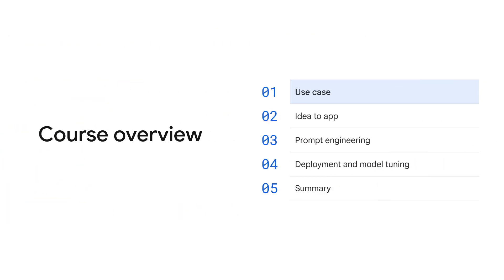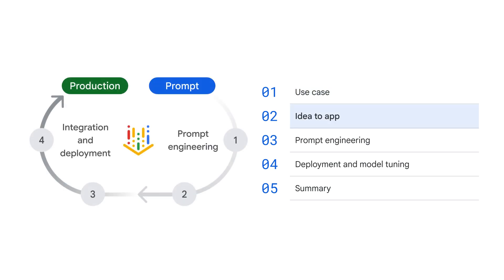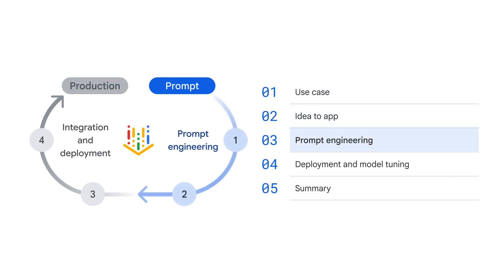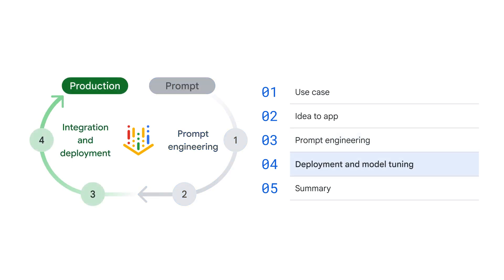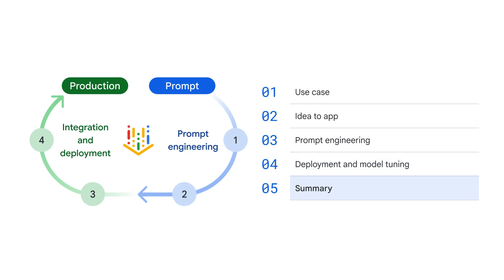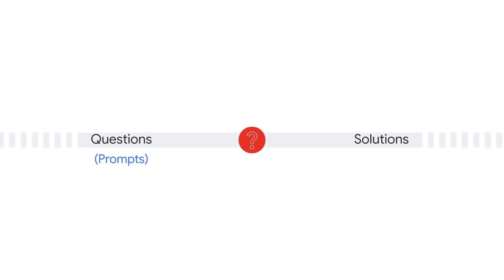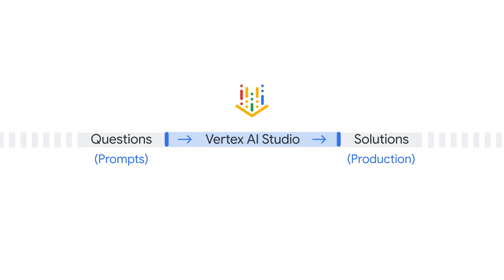In this lesson, you will start with the use case to see a practical application. Then, move to Idea2App, where you discover how to quickly turn a prompt into an application with no code. Third is prompt engineering, where you design, evaluate, refine, and manage prompts. The fourth lesson is about deployment and model tuning, where you build the application and continuously improve performance. And we will end with a recap and summary of the course. Ready to embark on a journey from questions or prompts to solutions or production? Let's get started with Vertex AI Studio.